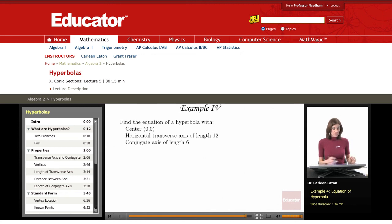Example 4, we don't need to do graphing on this one. We're just finding the equation of a hyperbola with the center here at 0, 0, and a horizontal transverse axis.